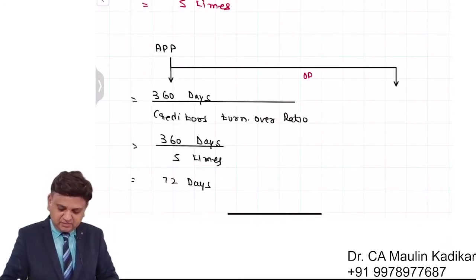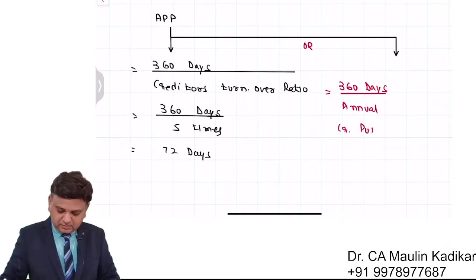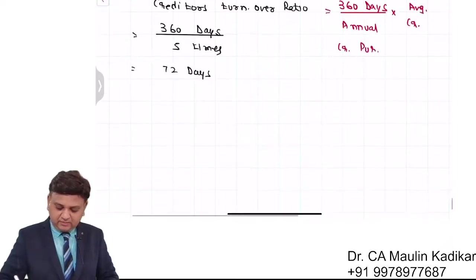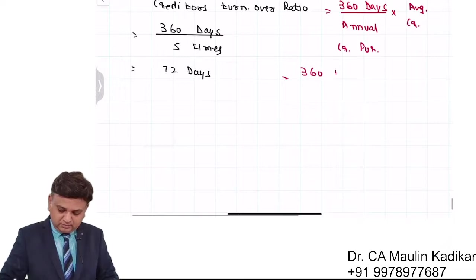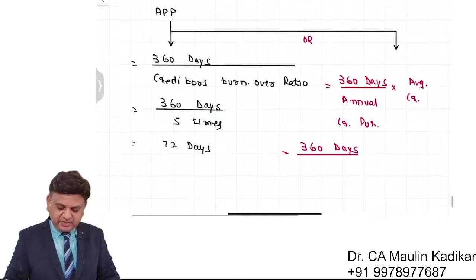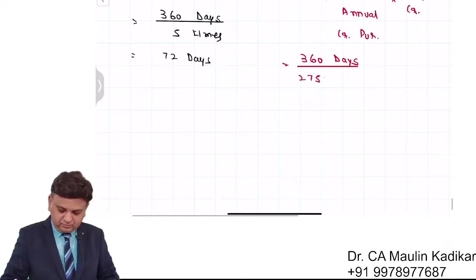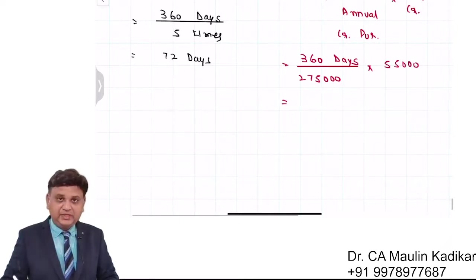Or otherwise, 360 days divided by annual credit purchase into average creditors. 360 days, so 360 days upon annual credit purchase is 275, into average creditors is 55. So the answer is 72 days.